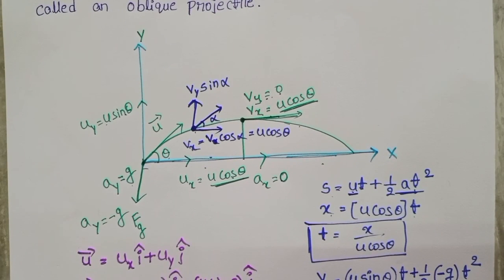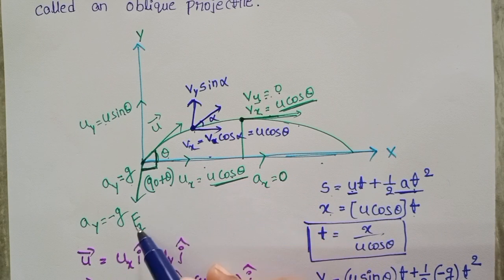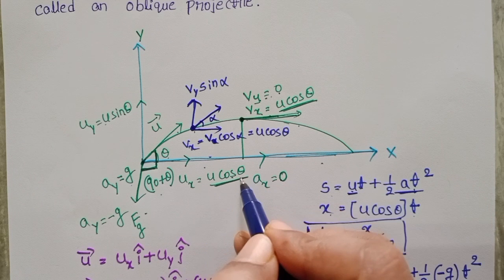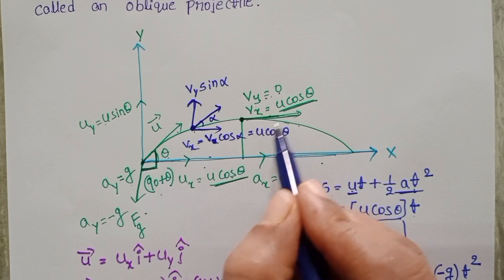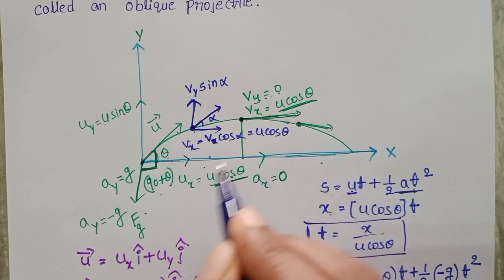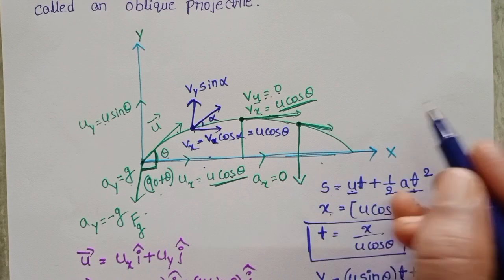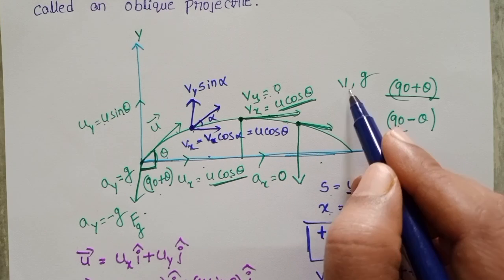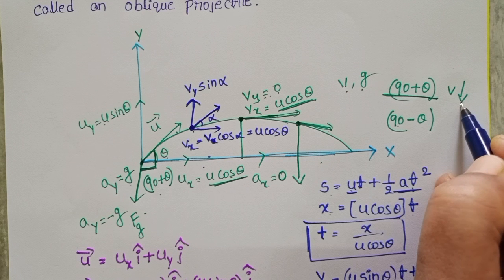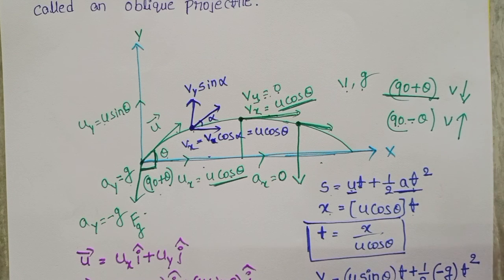The angle between the initial velocity and acceleration due to gravity is (90 + theta). At maximum height, the angle between acceleration due to gravity and velocity is 90 degrees. As the object descends, the angle becomes (90 − theta). When the angle between velocity and g is (90 + theta), velocity decreases. When the angle is (90 − theta), velocity increases.